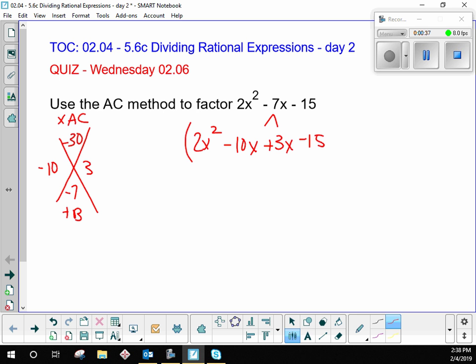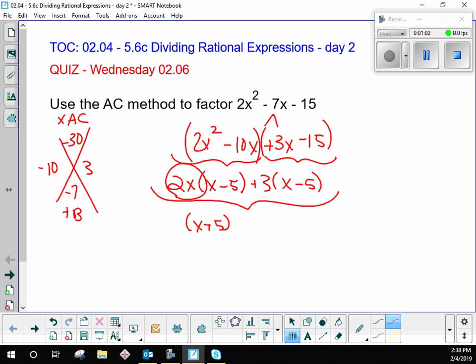So we group and we group, and we do GCF three times. We do it once for this group. The GCF there is 2x. The leftovers are x minus 5. We do GCF for this group. The GCF is 3. The leftovers are x minus 5. And then we do GCF for this whole thing. What do they all have in common? x minus 5. And the leftovers are 2x plus 3.